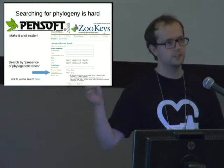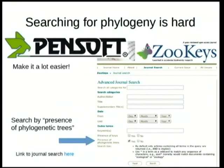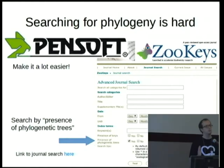Pensoft publishers deserve a lot of praise because they make it very easy for people interested in reusing phylogenetic trees. They've actually got a tick box in their search that lets you search for a particular data type — either taxonomic keys or phylogenetic trees. Unfortunately, not many people publish there.